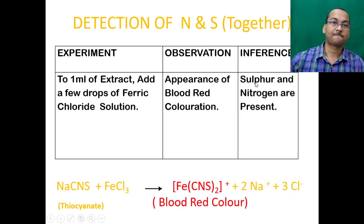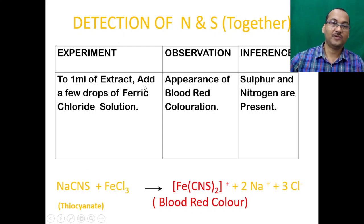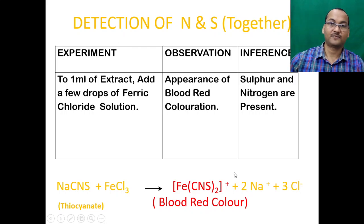If both nitrogen and sulfur are present in the compound, the Lassaigne extract will contain sodium thiocyanate (NaSCN). To this extract, add a few drops of ferric chloride solution. The sodium thiocyanate reacts with ferric chloride giving ferric thiocyanate, which is blood red in color, confirming that both sulfur and nitrogen are present.